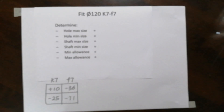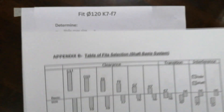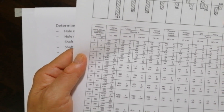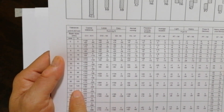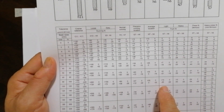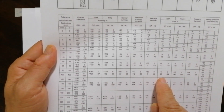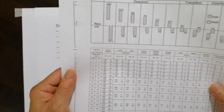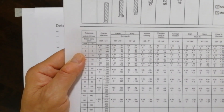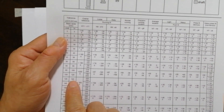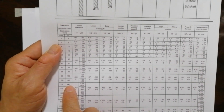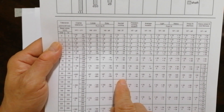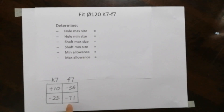Let me show you the table so you can see where I get these values. For k7, I put the table close to the camera — please focus — you can see that at 120, I look for k7 and I get plus 10 and minus 25. For f7, I don't find it in that table, so I go to the next table. At 120, I look for f7 and I get minus 36 and minus 71. That's how I got the four numbers.